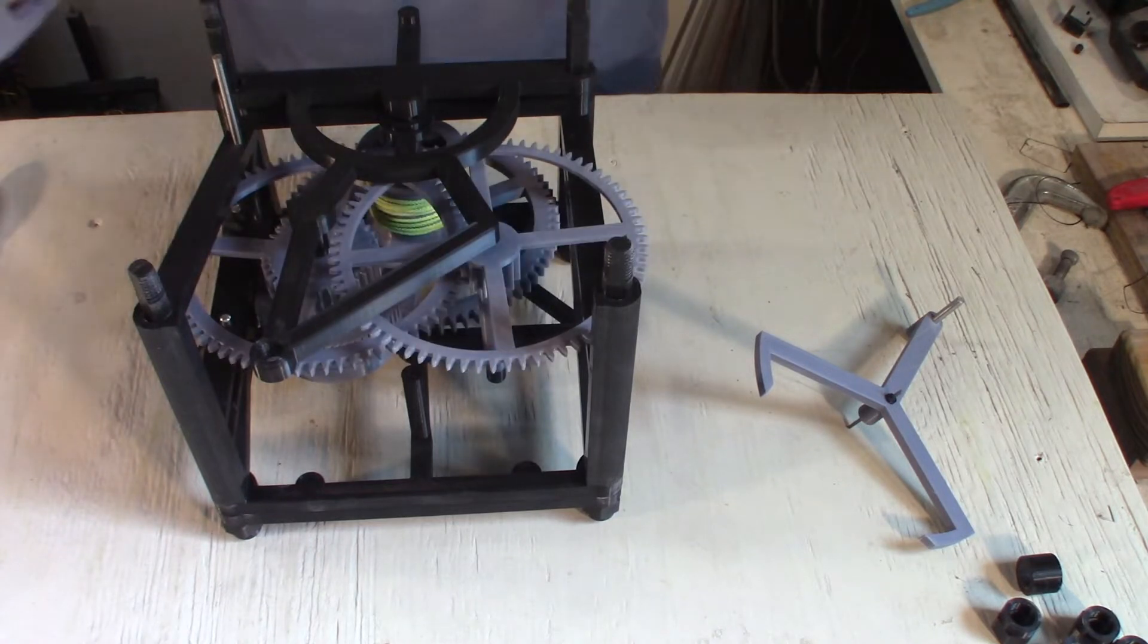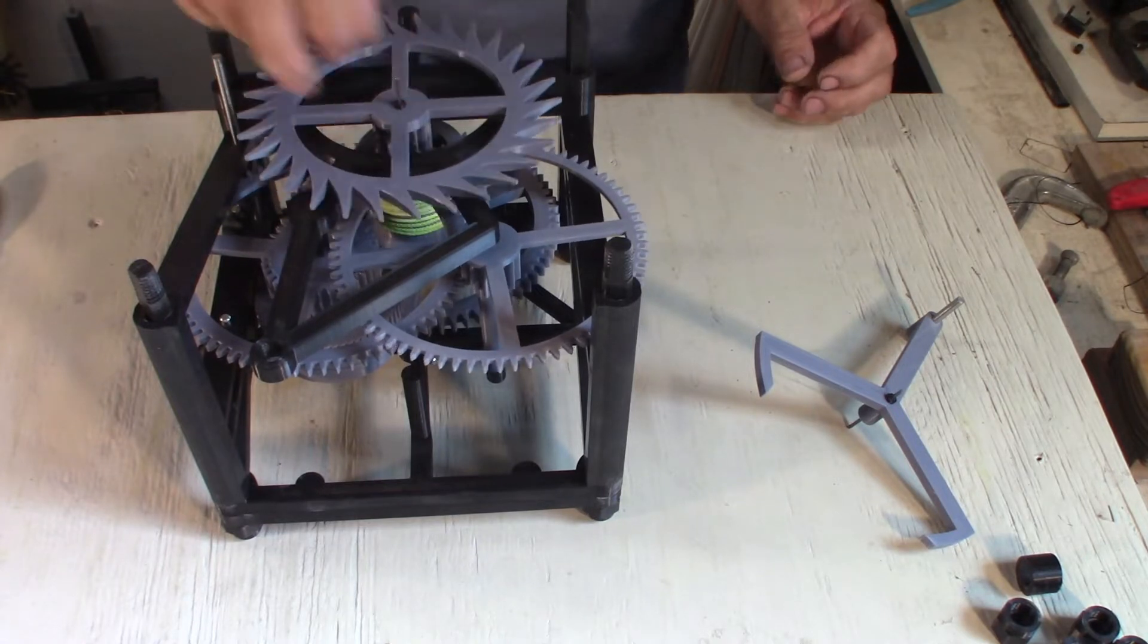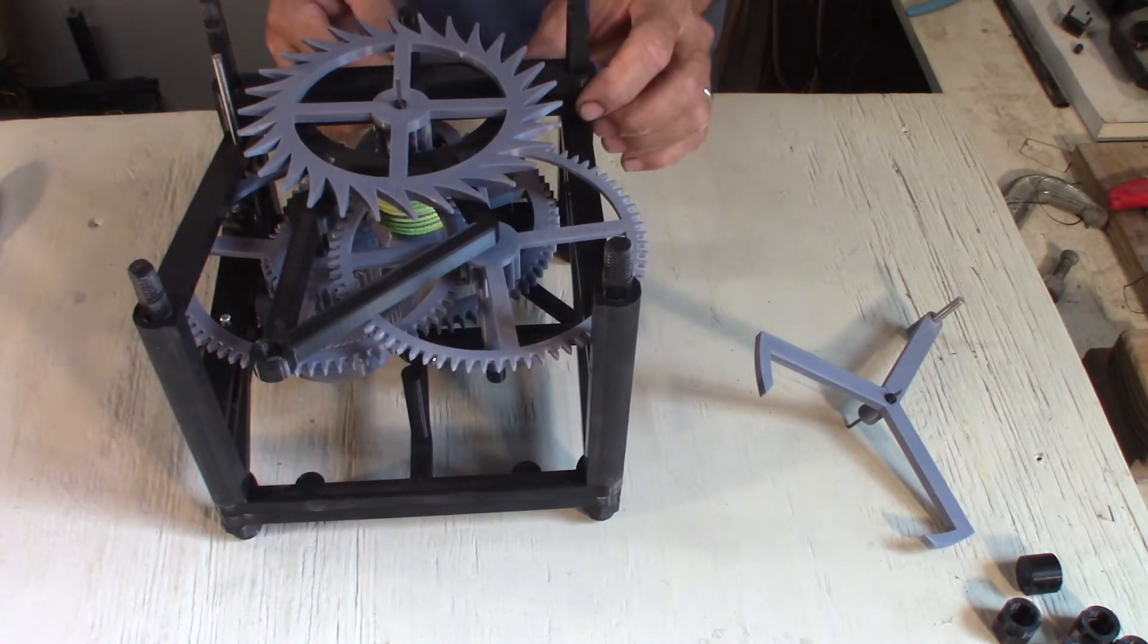When the back frame is in, you can check some a bit of play, nothing is binding. Next thing that comes in is the escape wheel. Should still spin.